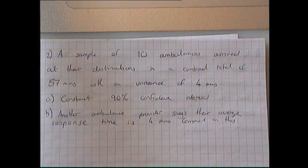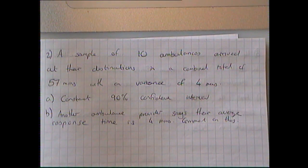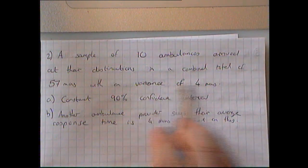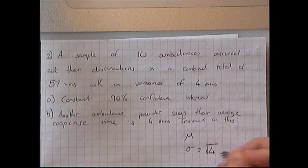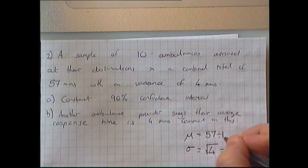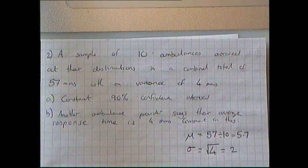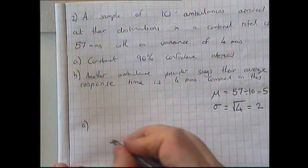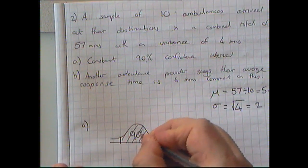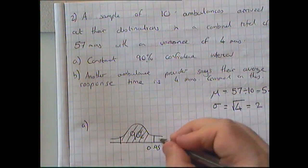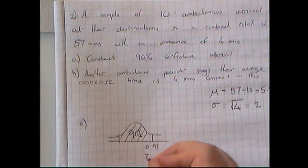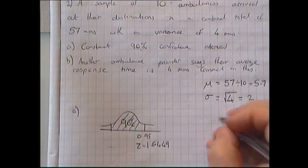Next question — pause the video and have a go. This time they give me a variance of 4, so the standard deviation is the square root of 4, which is 2. My mean: I've got 10 ambulances with a total of 57 minutes, so 57 divided by 10 gives 5.7 minutes. Drawing my normal distribution curve, I want the 90% confidence interval, so I'm looking for the 0.95 value, because each tail will only be 5%.